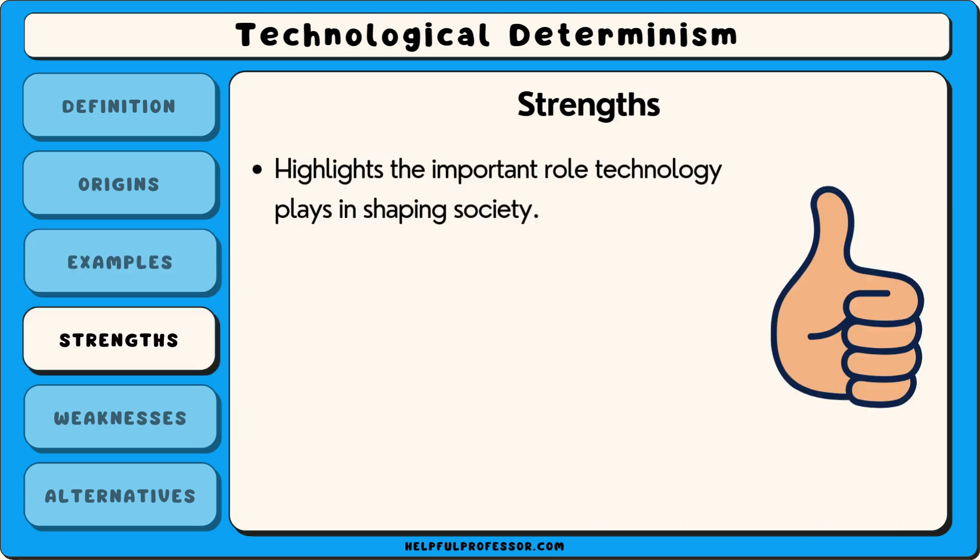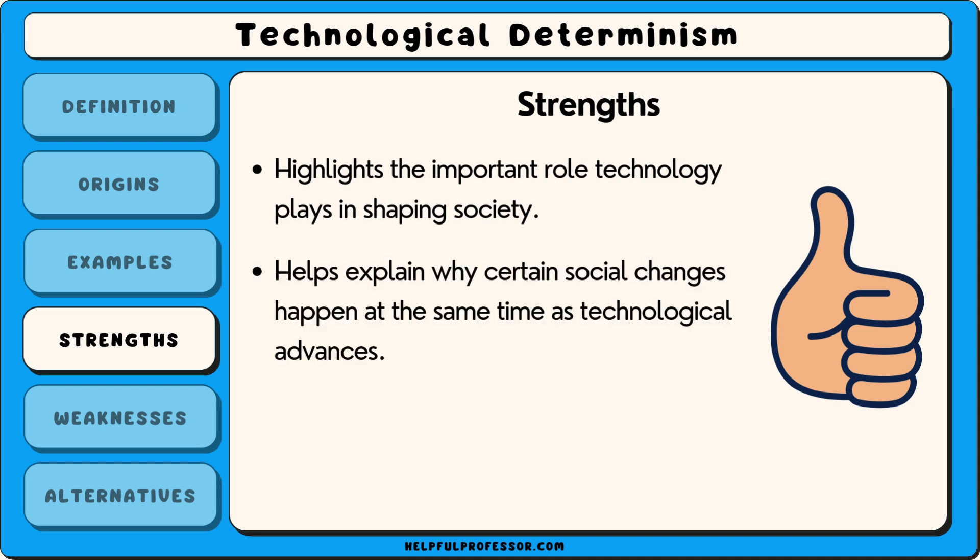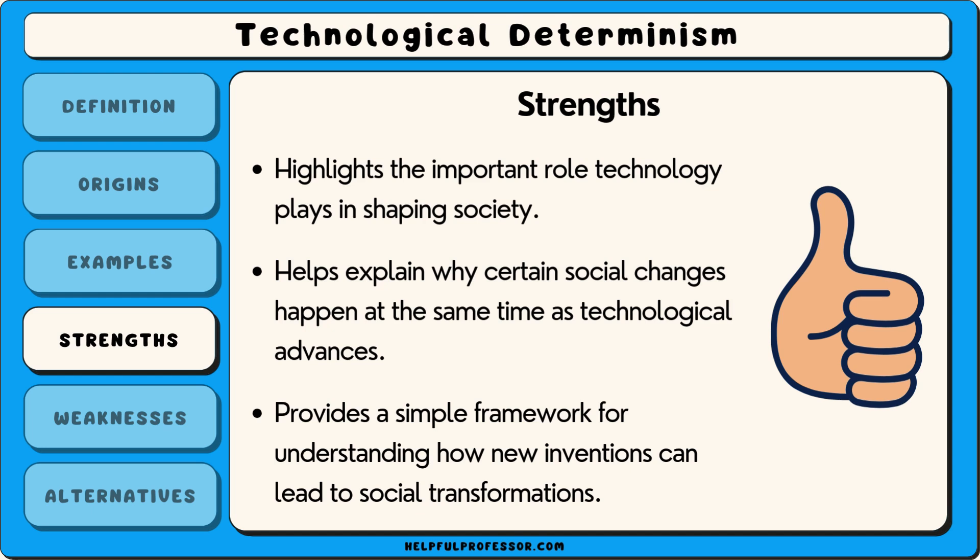One of the strengths of technological determinism is that it highlights the important role technology plays in shaping society. It helps explain why certain social changes happen at the same time as technological advances, such as how the rise of smartphones led to changes in communication and social interaction. It also provides a simple framework for understanding how new inventions can lead to social transformations, making it easier to see connections between technology and society.